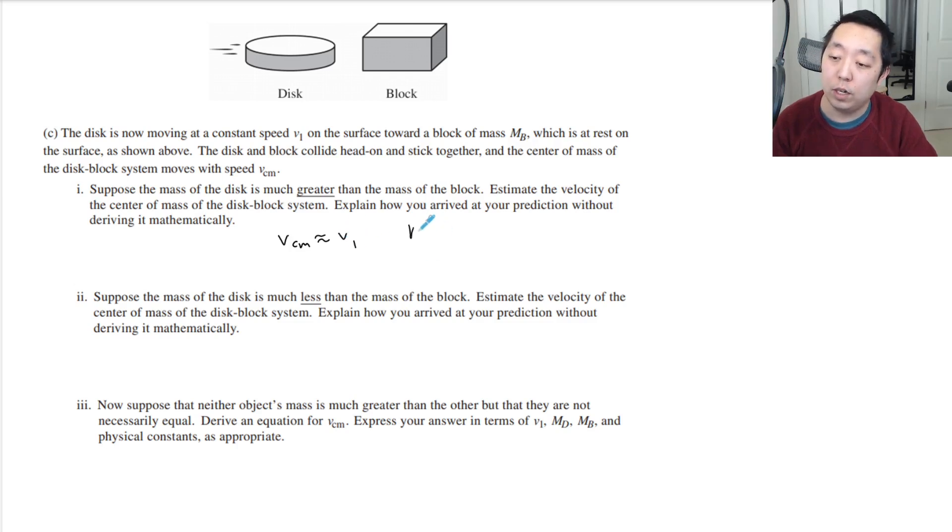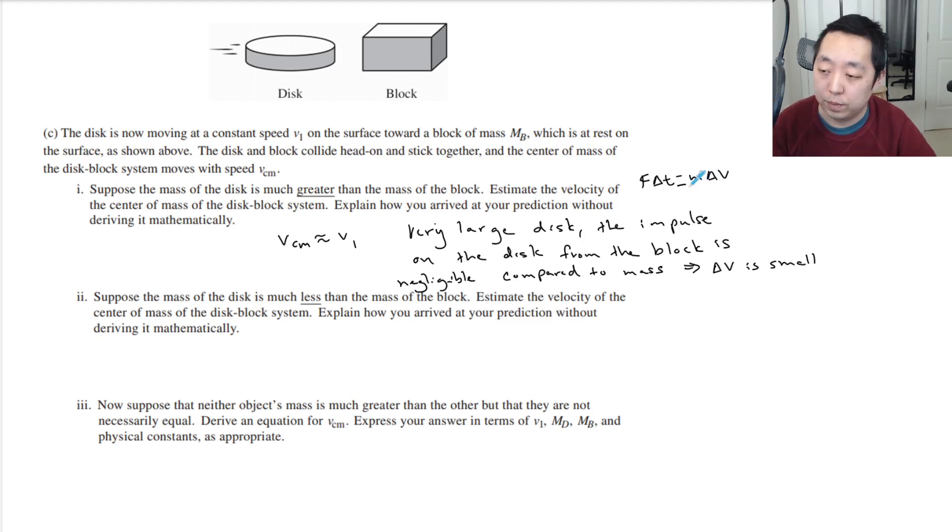With a very large disk, the impulse on the disk from the block is negligible compared to its mass, which means that delta V is small. Remember, impulse equals M delta V, and so when you divide by a very large mass, this delta V is very small.